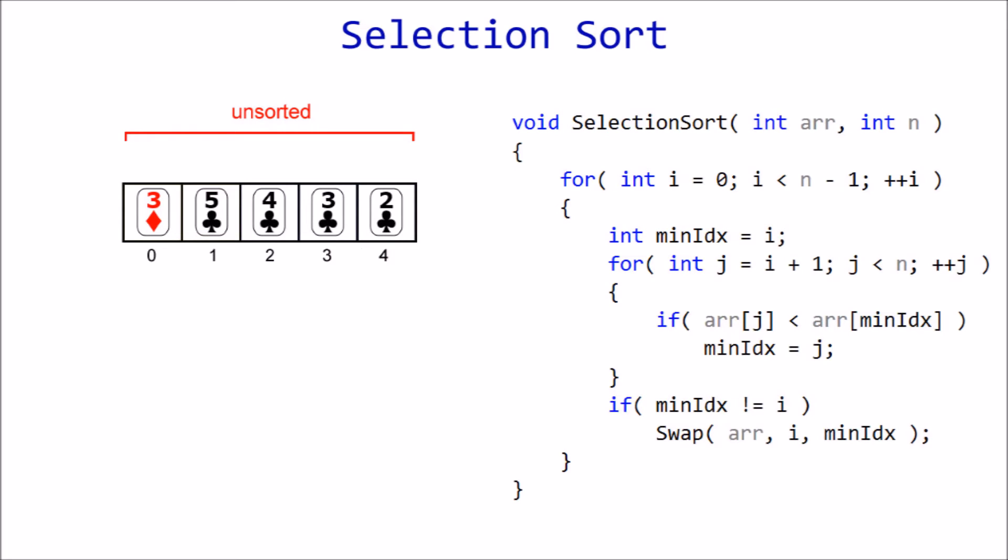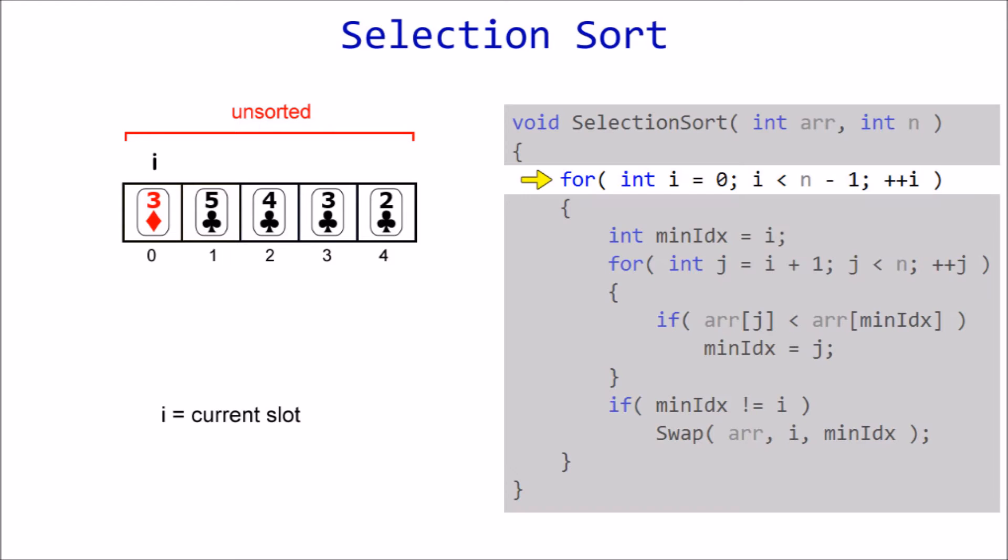Now we'll walk through this same process with some actual C++ code and a different set of cards. I represents the current slot, which starts off at index zero. We set the minimum index to a default value equal to I, so we have something to compare against. This will keep track of where the minimum element is stored.